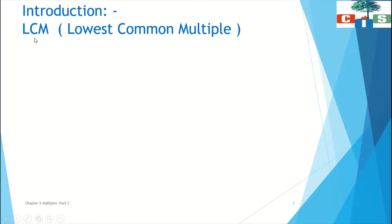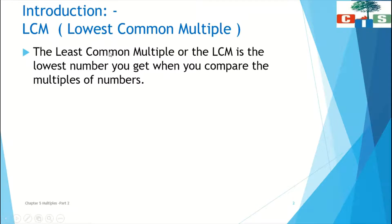LCM is a short form for Lowest Common Multiple. It is also known as Smallest Common Multiple or Least Common Multiple. The least common multiple, or LCM, is the smallest number we get when we compare the multiples of numbers. When we compare the multiples and find the lowest common number, that is known as the LCM. We can find the LCM by various methods, which we will be studying one by one.